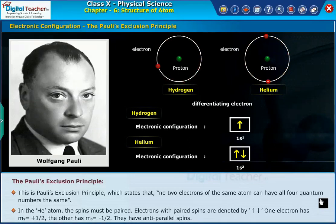Electrons with paired spins are denoted by up arrow and down arrow. One electron has mₛ=+½, the other has mₛ=-½. They have anti-parallel spins.